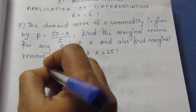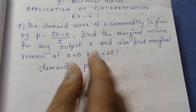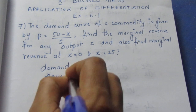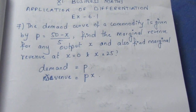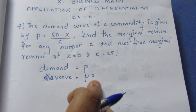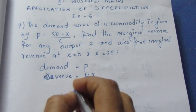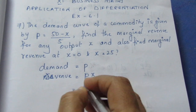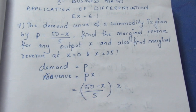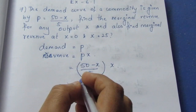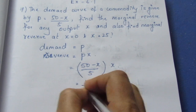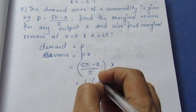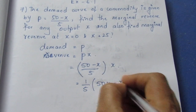Demand is P. Revenue formula is P into x. If there is a demand, that is the x value — the output — we multiply it. So revenue R equals P into x, which is 50 minus x by 5 into x. Multiplying it out, we get 50x minus x squared by 5.